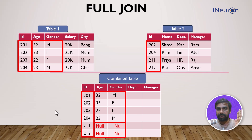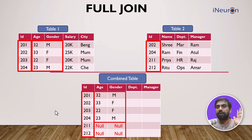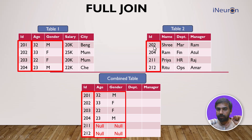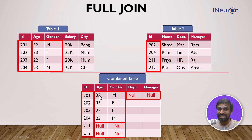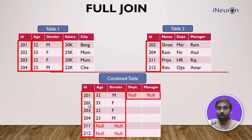For those missing cells, SQL will put in NULL values to indicate that the data is not available. SQL will say: you asked for this, I've combined the tables, but this data I don't have — so I'm putting NULL. Similarly, 201 is not present in table two, so department and manager for 201 will also be NULL.